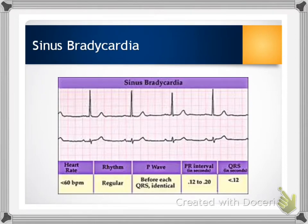Sinus bradycardia: the person will have a regular rhythm but the heart rate will be less than 60. For some people this will be normal — you might see this in athletes, and a lot of times while we're sleeping we go into a sinus bradycardia. Other times where it may be of concern can be if the patient is having carotid massage, doing the Valsalva maneuver, or administration of medications such as beta blockers or ACE inhibitors.